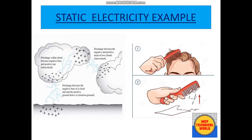Each of the two rubbing layers has a different potential value. Some clouds have potential energy with protons, that is positive charges, and some have electrons, that is negative charges. The earth also has electrons, which are negative potential charges.